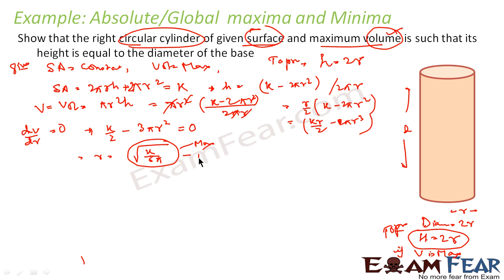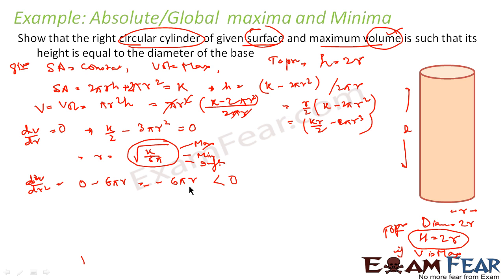For the second derivative: d²V/dr² = -6πr, which is always less than zero since r is always positive. Therefore volume is always at a maximum at this critical point. Thus r = √(k/(6π)).